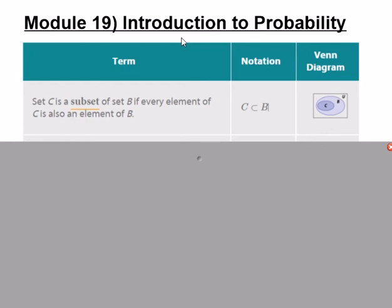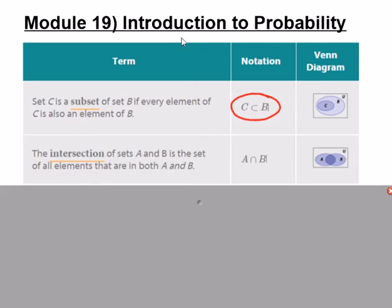A subset is a set of numbers that falls inside another set of numbers. Pay attention to the notation — the sideways-U symbol means subset, meaning every element of C is part of B, but not necessarily vice versa. Not every element of B has to be part of set C.